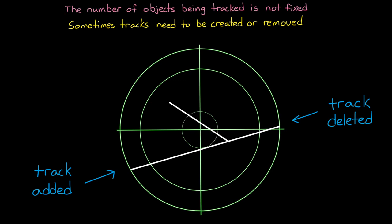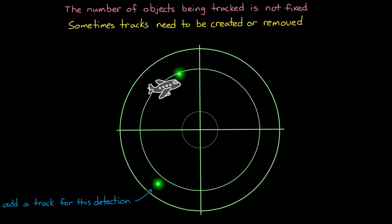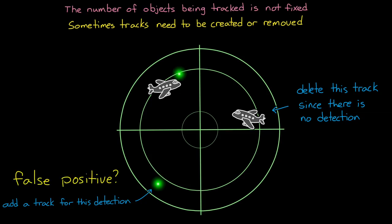So we need to think about the criteria for creating and deleting object tracks. And a basic way to approach this is to add a track whenever there is a detection that doesn't match an existing object, and then just delete a track if an existing object is not detected. The thing that complicates this is that sometimes sensors have false positive measurements. They detect something that isn't actually there. And sometimes sensors fail a few times in a row to detect an object that is actually there.